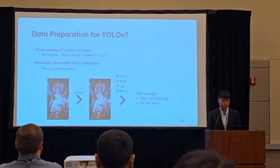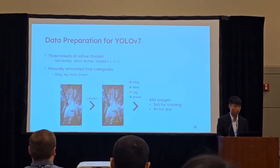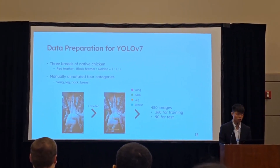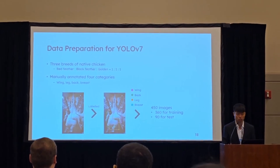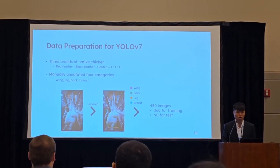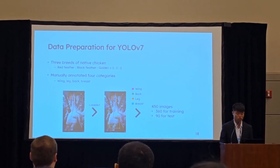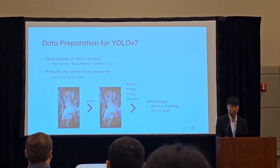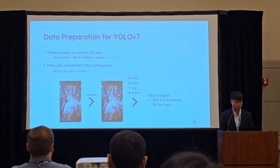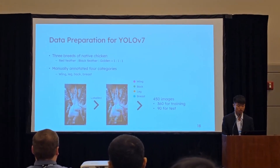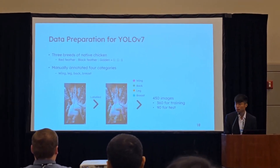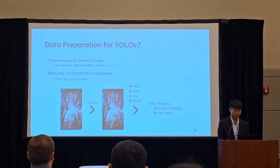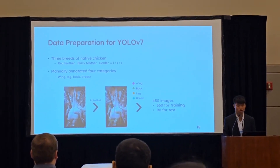For the data preparation for YOLOv7, I use three breeds of native chicken images including the red-feathered native chicken, black-feathered native chicken, and golden chicken, with a data ratio of 1:1:1. I manually annotated them into four body part categories: wing, back, and breast. There are 450 images in total, with 360 for training and 90 for testing.